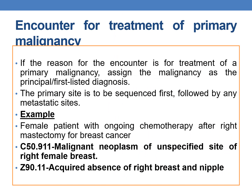For encounter for treatment of primary malignancy: if the reason for encounter is treatment of primary malignancy, then primary malignancy should be the principal diagnosis (PDX), followed by any metastatic sites. Example: a female patient with ongoing chemotherapy after right mastectomy for breast cancer. The reason for visit is breast cancer, so C50.911 (malignant neoplasm of unspecified site of right female breast) is the PDX. Additionally, since the patient had a right mastectomy, assign status code Z90.11 (acquired absence of right breast and nipple).